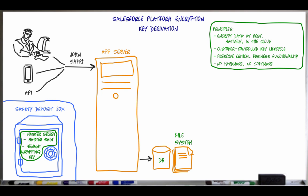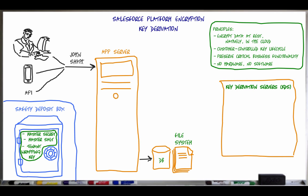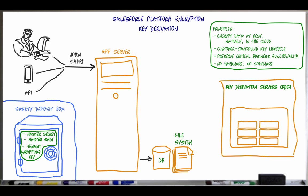Key derivation servers are load-balanced servers sitting in each Salesforce data center. Each key derivation server, or KDS, has embedded Luna PCIe HSM cards manufactured by Gemalto. These HSMs are FIPS 140-2 compliant and Common Criteria EAL4 Plus validated. The KDS is where organization-specific tenant secrets may be generated and encrypted, and where the data encryption keys are derived.